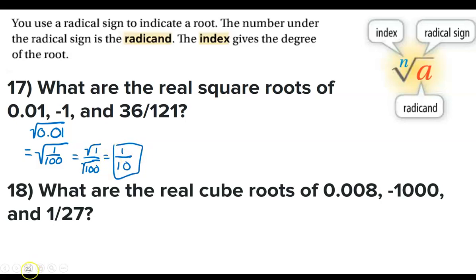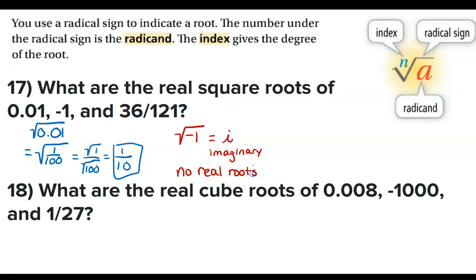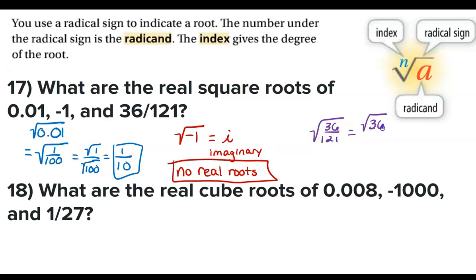The second one: what are the real square roots of -1? We know this to be i, the imaginary number, which means there are no real roots. For the last problem, the square root of 36/121 — we square root the top and square root the bottom. The square root of 36 is 6 and the square root of 121 is 11.